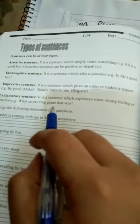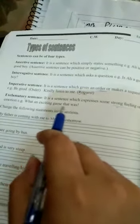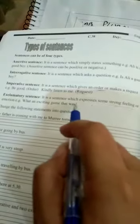Exclamatory sentence: It is a sentence which expresses some strong feelings or emotions. For example: What an exciting game that was! In this case, we use an exclamation mark.